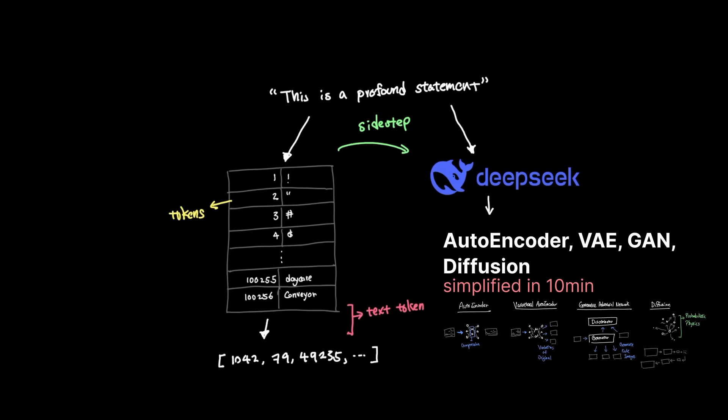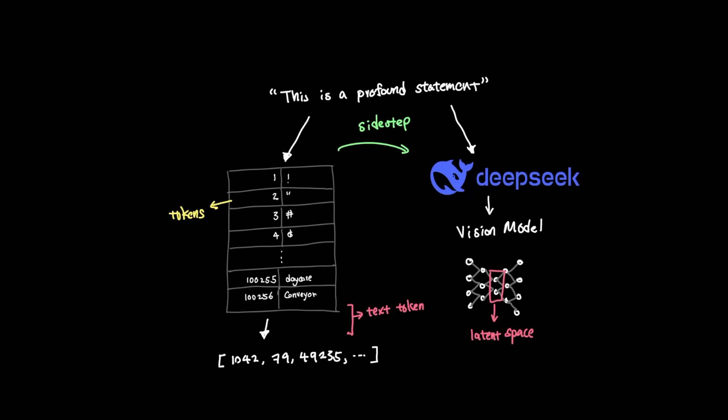And in one of the previous videos called Autoencoders to Diffusion for beginner, I talked about how data compression and feature extraction in images work if you want to learn more about them. Anyway, DeepSeek shifted the focus on where data compression happens, where instead of compressing text into symbolic representation, they used latent space.